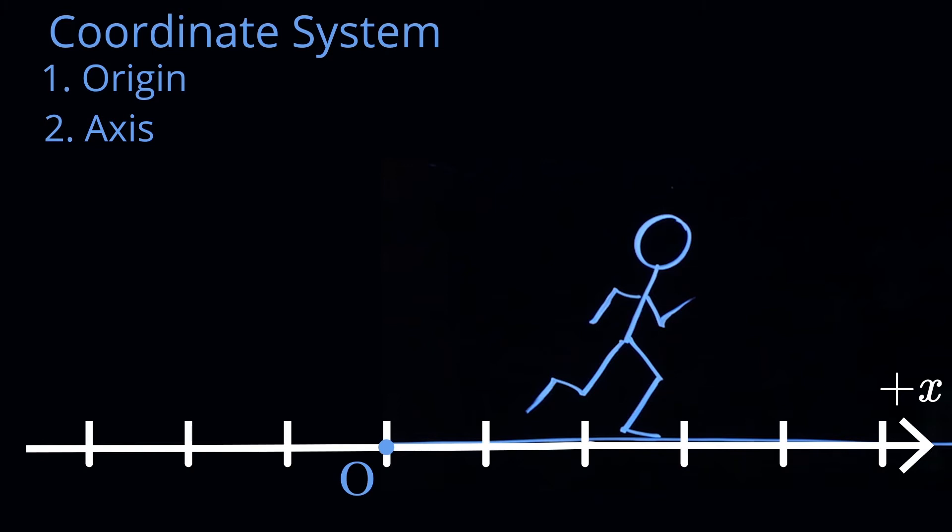And what's important here is to introduce a positive coordinate direction. And so the way I'll do that is I'll call this the plus x, and on this side of the origin, x is negative.